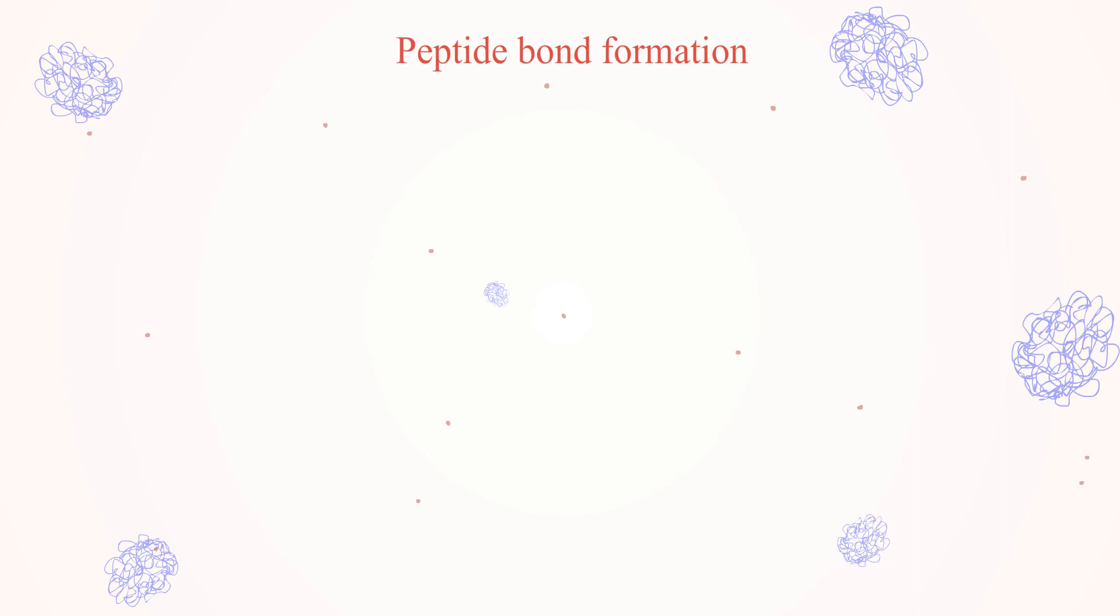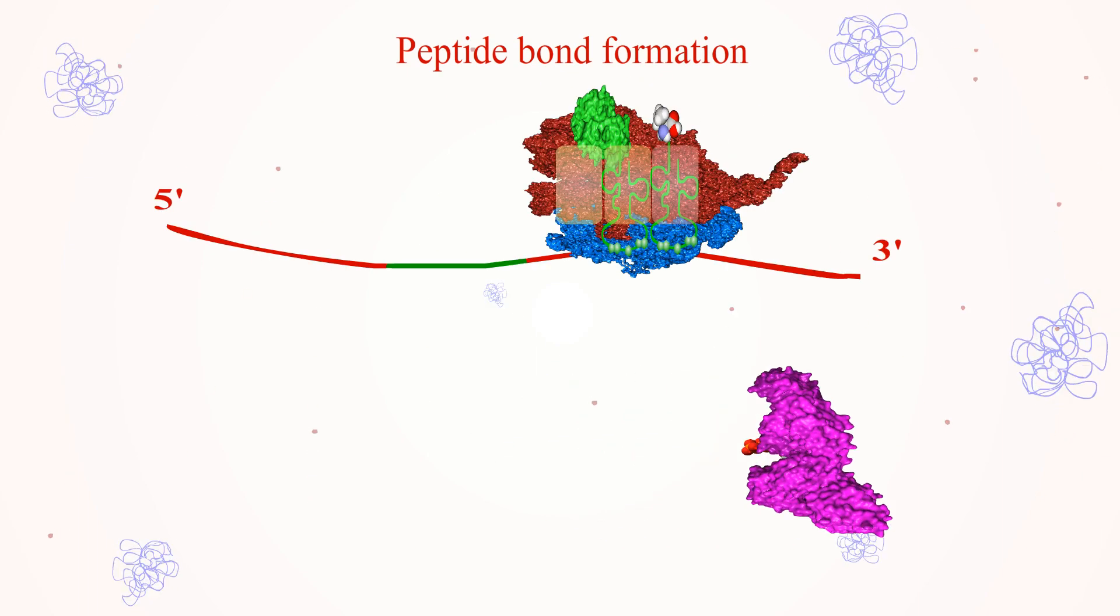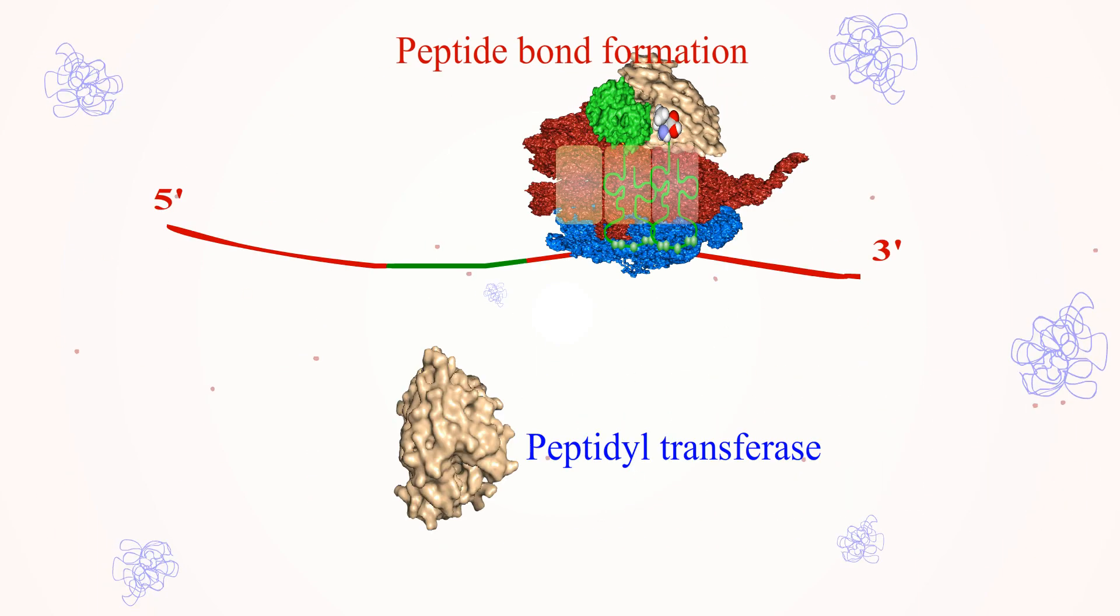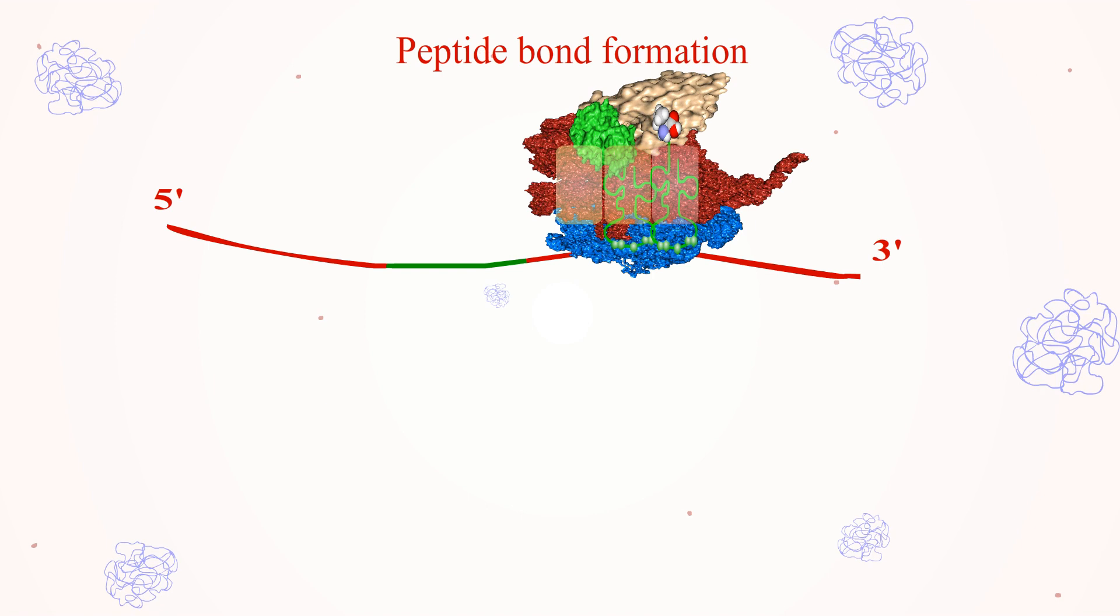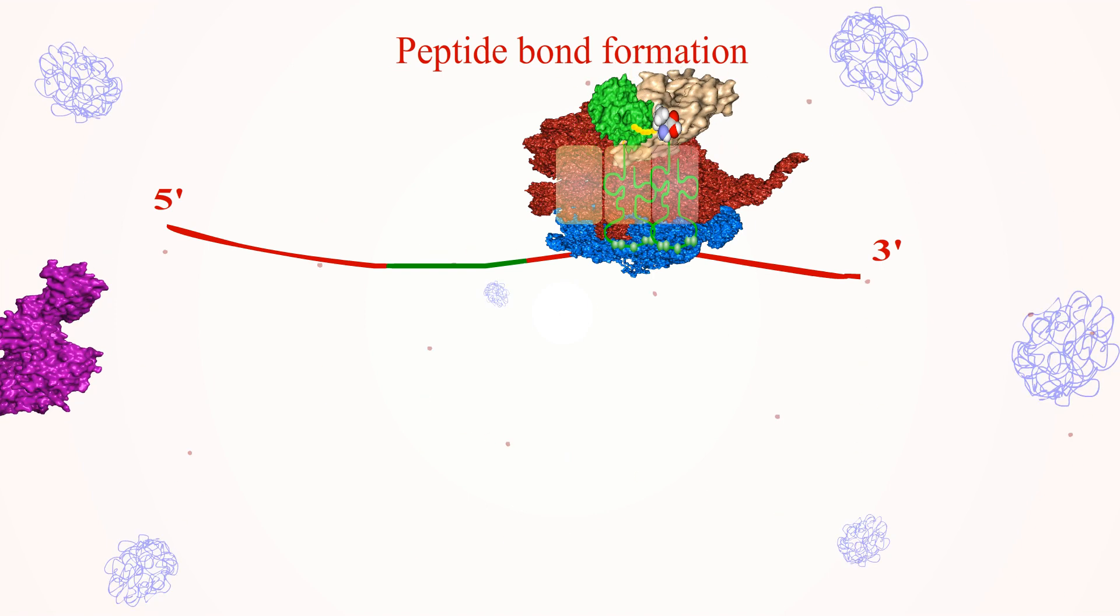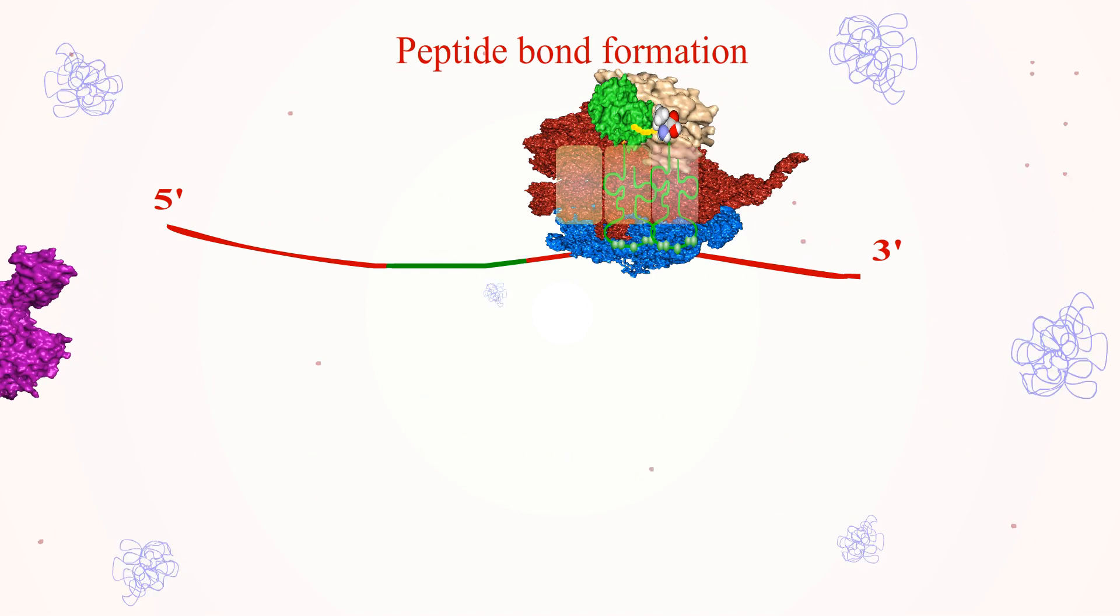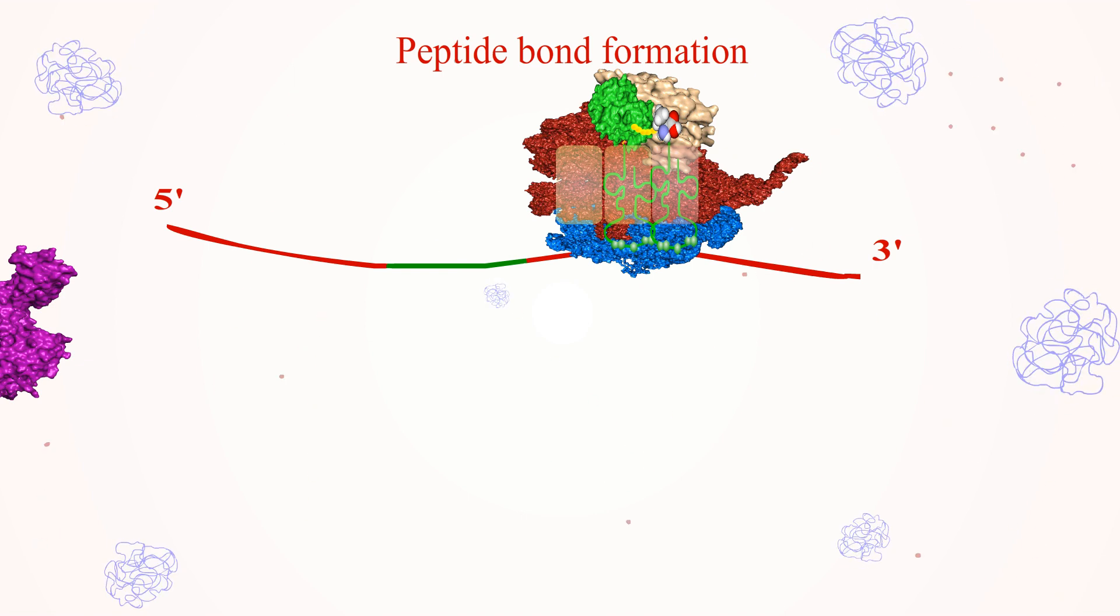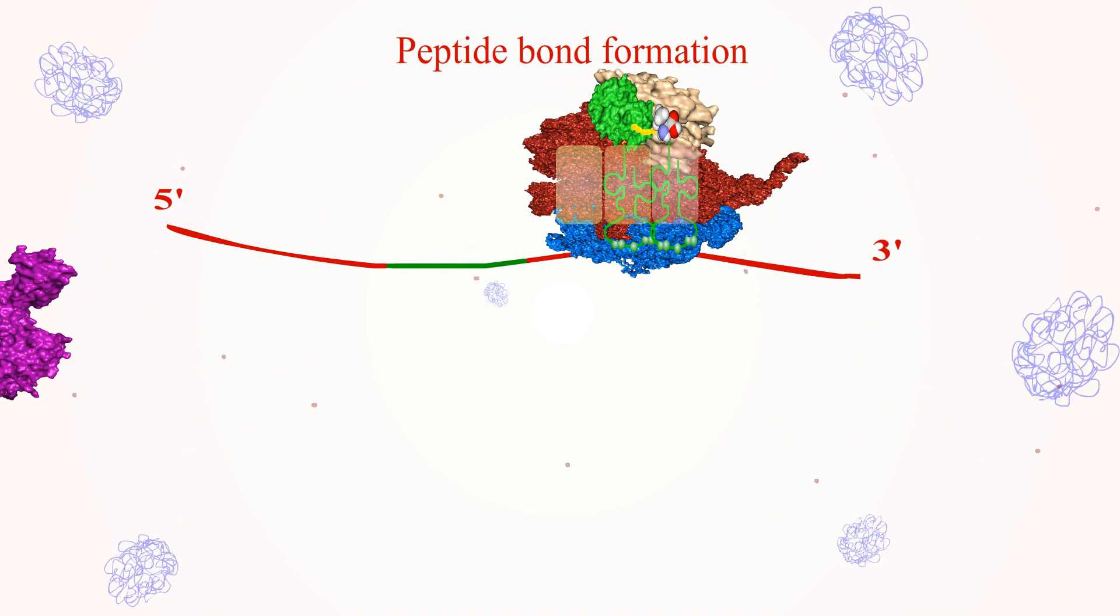Peptide bond formation: The peptide bond formation is catalyzed by the enzyme peptidyl transferase. In this reaction, the carboxyl end of the amino acid that is bound to tRNA in the P-site is uncoupled from the tRNA and joined to the amino group of the amino acid in the tRNA present in the A-site, through a peptide bond.